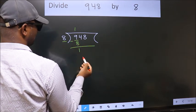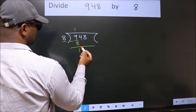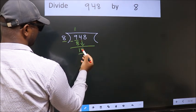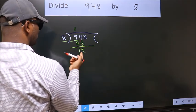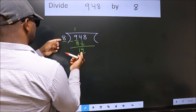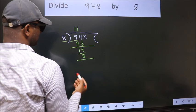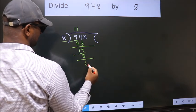We get 1. After this, bring down the beside number. So, 4 down. So, 14. A number close to 14 in the 8 table is 8 once 8. Now we subtract. We get 6.